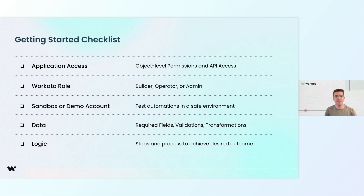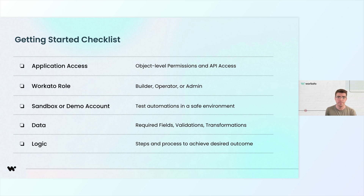To set yourself up for success, here's a quick getting-started checklist to make sure you have everything in place before you start building. First, ensure that you have the necessary access to all business apps. Then, confirm that you have the right Workato role to manage recipes and connections. Use a sandbox or demo environment for testing to avoid impacting live data. Ensure you have a clear understanding of the data and logic needed for automation, make sure all user permissions are set up correctly using a service account instead of a personal account, and be mindful of API rate limits when using sandbox accounts to avoid hitting limits during testing.